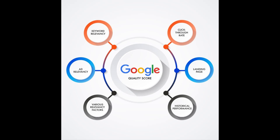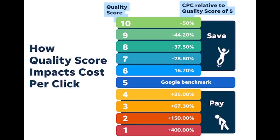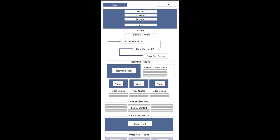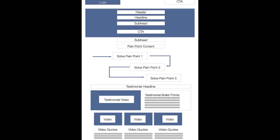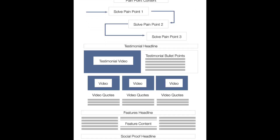Advertising platforms use a similar algorithm to determine your quality score — an arbitrary score given to each page based on how it relates to a keyword. This helps advertising platforms keep irrelevant information off certain searches, but it also allows them to artificially inflate the price of a click. The code structure for these types of pages is similar to the SEO structure, with a few major differences.